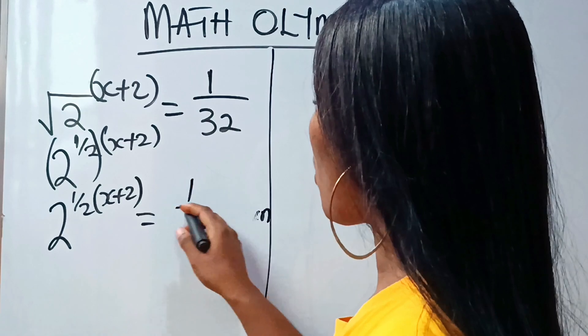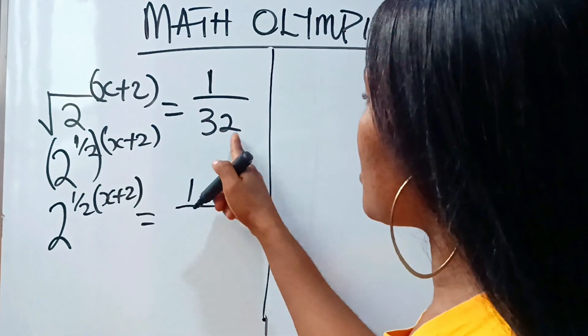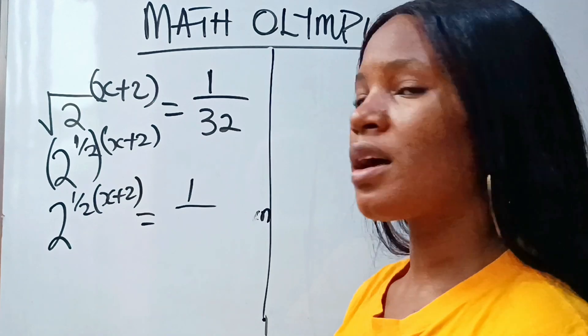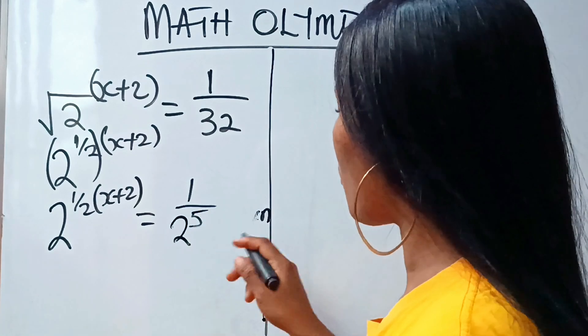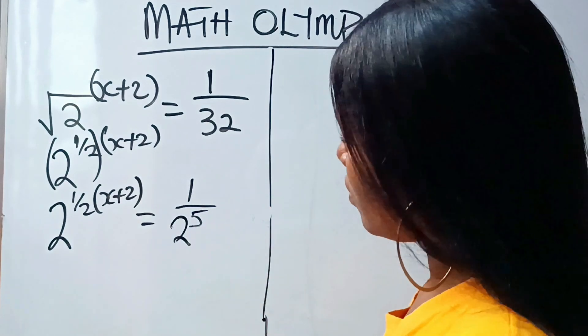Is equal to 1 over... Now, this 32 can be written as 2 to the power of 5.